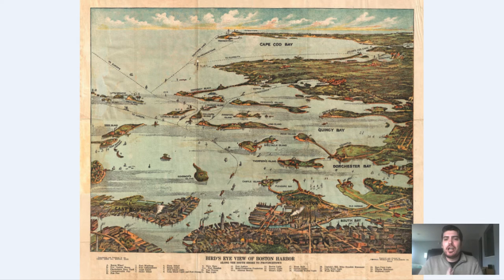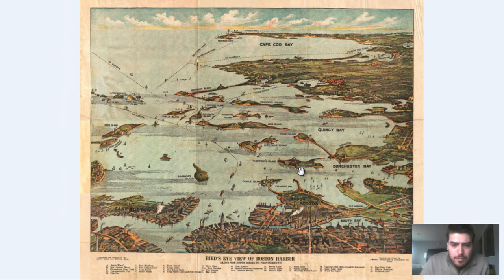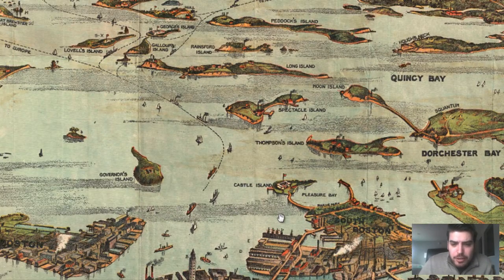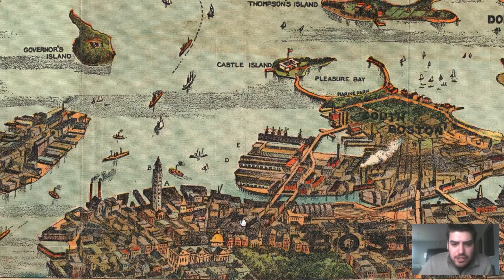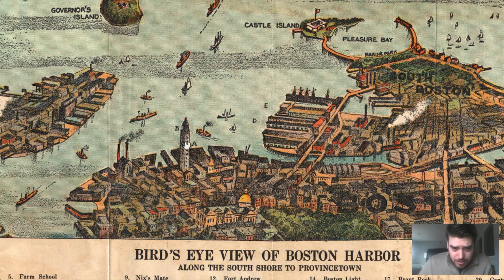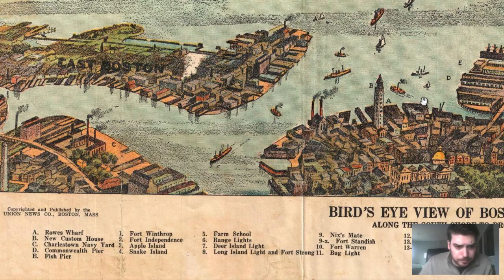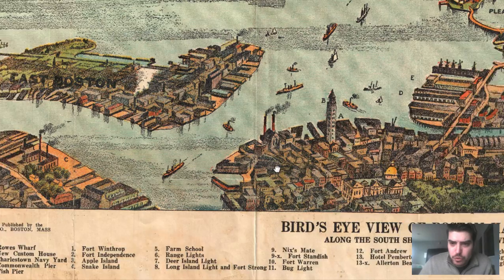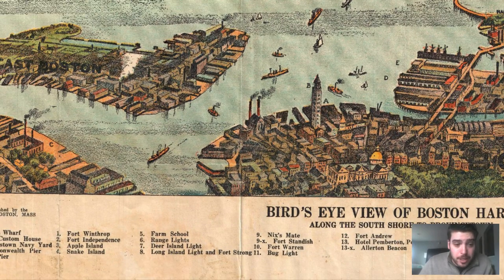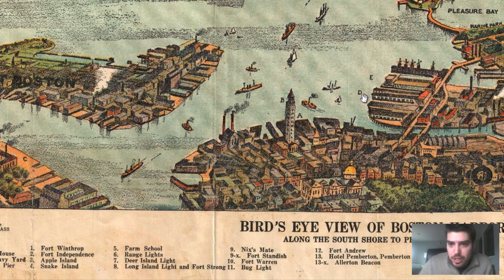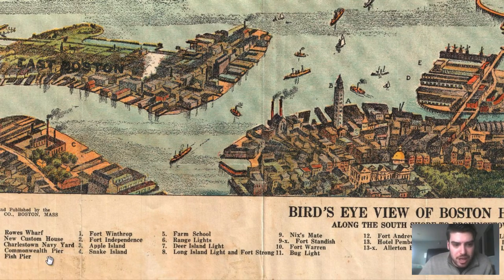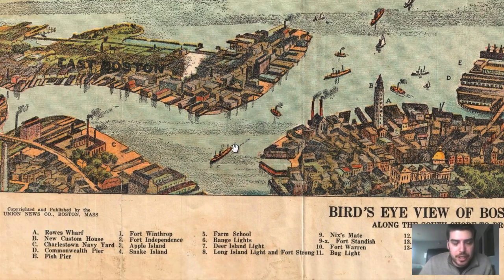So just some history into Boston — we're going to dive right in and zoom and explore this map. We can see various elements and labelings: A is Rose Wharf, B is the new Custom House. There are piers labeled D and E, and we've got the Commonwealth Pier and the Fish Pier right over here.